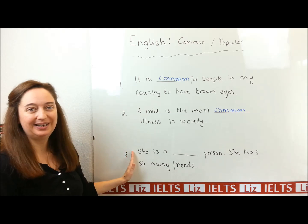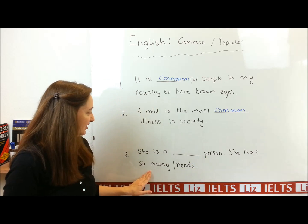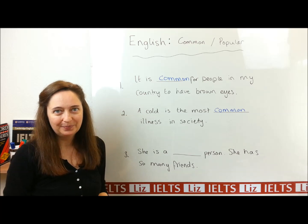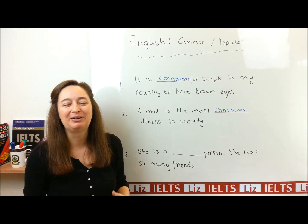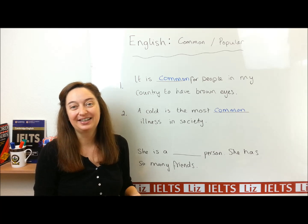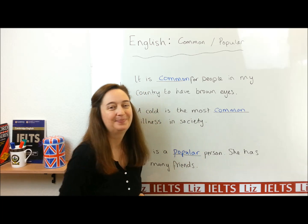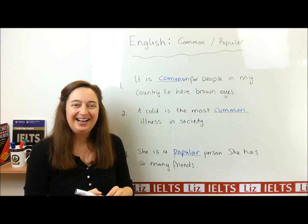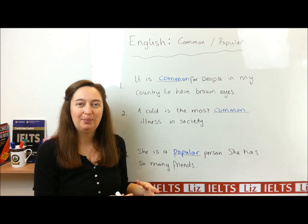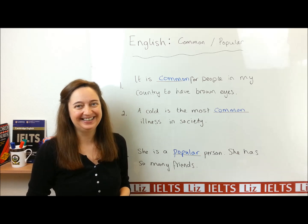And the last one, number three: 'She is a ___ person. She has so many friends.' So, is this about something that's normal and happens frequently? Or is it about liking? Well, having many friends usually means people like the person. So this answer is popular. Did you get them all right? I hope you understand a little bit more now about the difference between common and popular. That's all for this lesson. I'll see you again in another lesson.